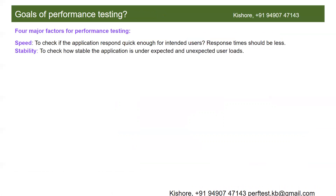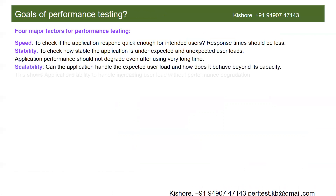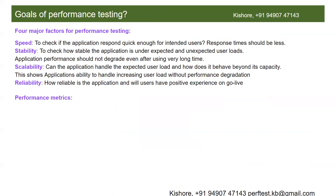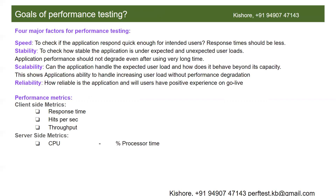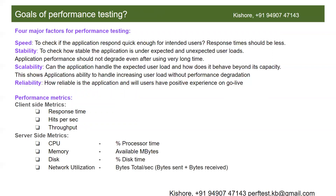Stability refers to how stable the application is under expected load and more than expected load. Scalability is how scalable the application is. Reliability is how reliable the application is once it is in production. While doing performance testing, we monitor performance metrics on both client side and server side. Important client-side metrics are response time of each page, hits per second, and throughput. Server-side metrics include CPU percentage, process time, available memory, disk utilization, disk time, network utilization, and processor queue length.